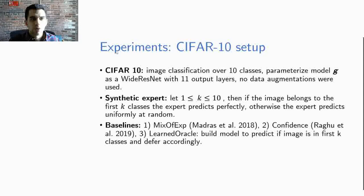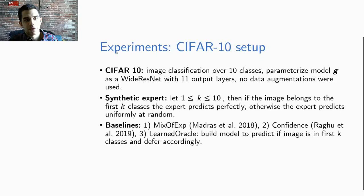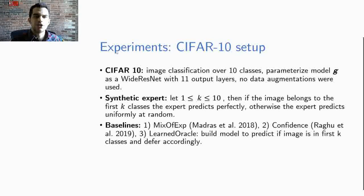We simulate multiple synthetic experts as follows. Let K be an integer in 1 to 10 then if the image belongs to the first K classes the expert is perfect otherwise the expert predicts uniformly at random. So we have a clear region of expertise for the expert. This is the first K classes.